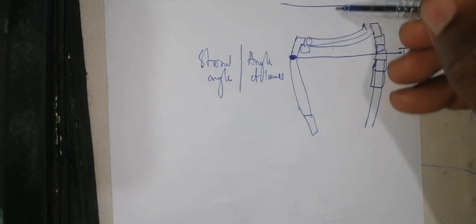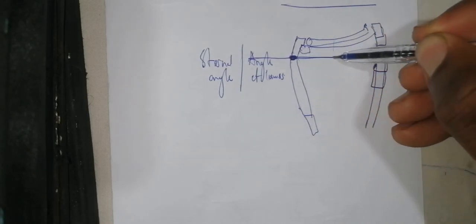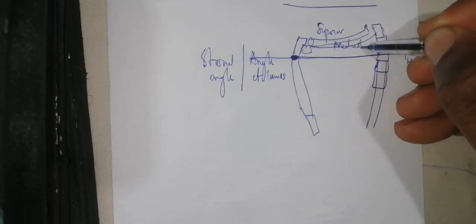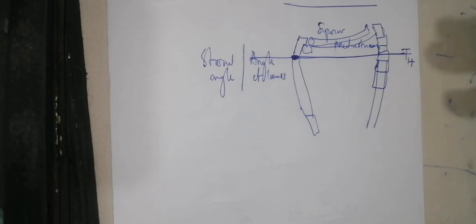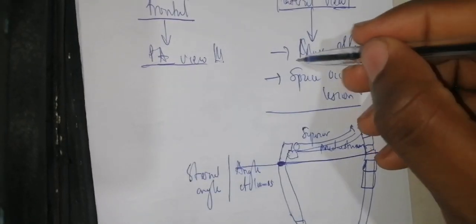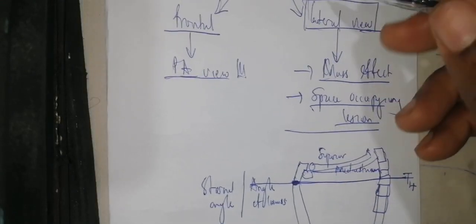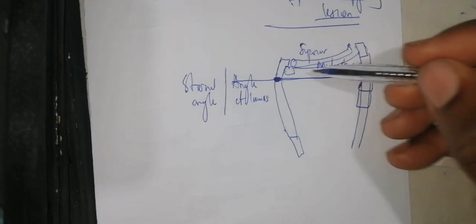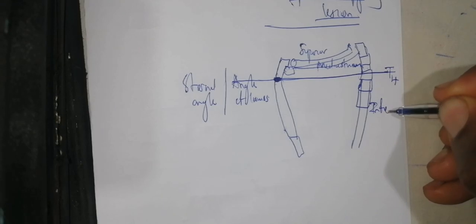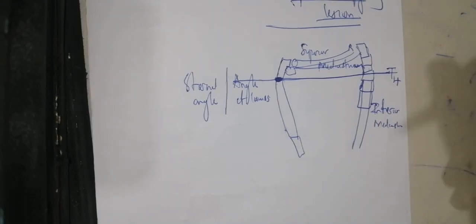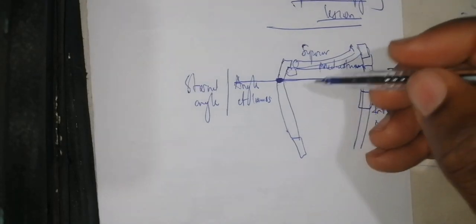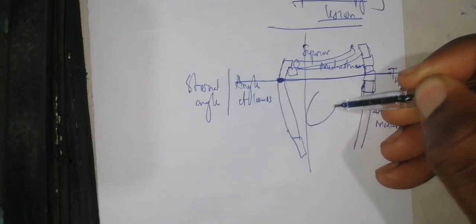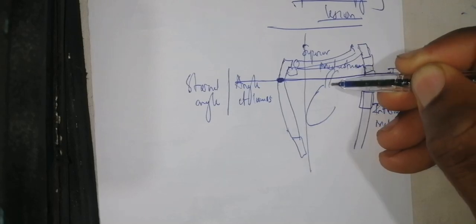Above the imaginary line connecting the angle of Louis and T4 is called the superior mediastinum. You need to know the structures located there in order to understand mass effects when you have a pathology on the lateral chest X-ray. Inferior to this line is the inferior mediastinum, which is divided into three parts. The heart is located in the middle section, with different vessels coming up from it.